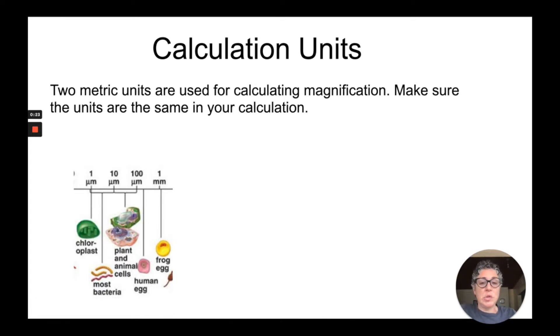There are two metric units which are used for calculating magnification. If you are doing magnification calculations, you need to make sure that the units are the same in your calculation otherwise you'll get a wrong answer. These measurements are either in millimeters or micrometers which are depicted here in this illustration. Micrometers, typically abbreviated μm, and millimeters, abbreviated mm, have a unit measurement between them of 1,000. So 1,000 micrometers is equal to 1 millimeter.